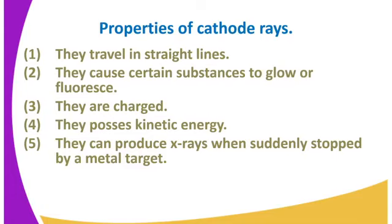We begin by looking at the properties of the cathode ray. First, let us go back and look at thermionic emission. During thermionic emission, two circuits are connected: one to the heater and another to the ammeter. The second circuit has a gap to be filled by electrons moving from the cathode towards the anode, allowing current to be recorded on the ammeter.